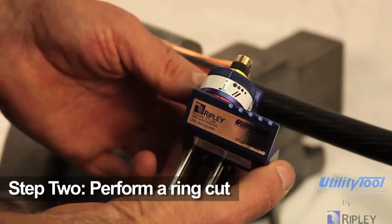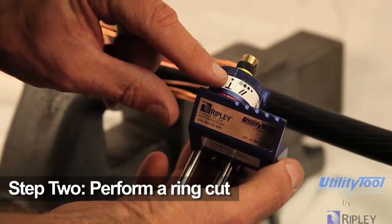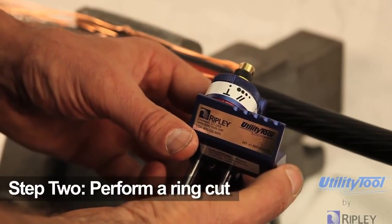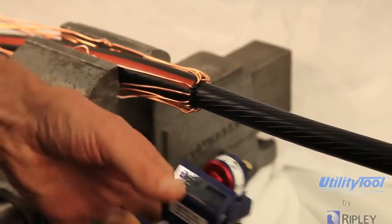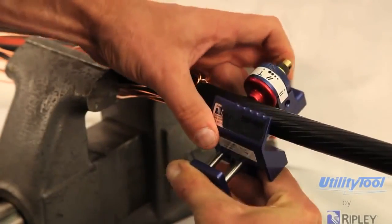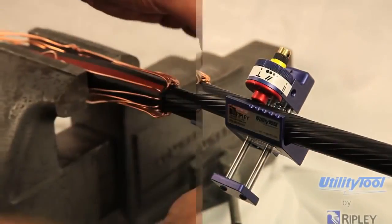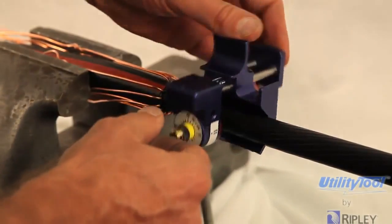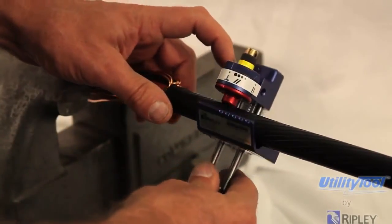Step 2. To perform a ring cut, first observe the blade positioning indicator and ensure it is in the square cut position. Next, lower the jaw to open the tool and secure the tool on the cable at the termination point of the Semicon. Rotate the tool one full turn counterclockwise around the circumference of the cable for a ring cut.